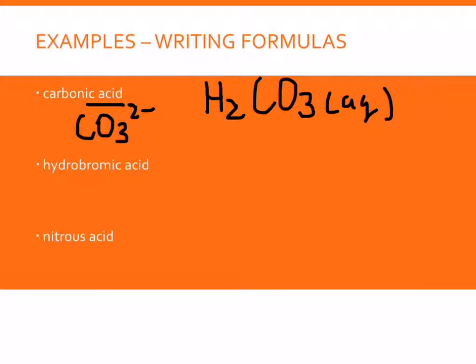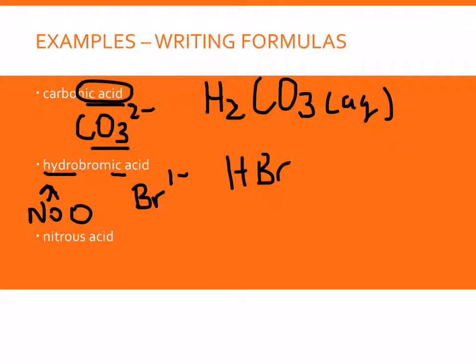So again, the -ic acid comes from the -ate ion mixed with hydrogen. So hydrobromic acid. So when you see hydro, that prefix, that is telling you that there's no oxygen because only our oxygen acids will never have hydro. So hydrobromic acid means that we're mixing it with bromine and the bromide ion is one minus. So in this case, we need one hydrogen along with our bromine and then add the AQ because they are acids.